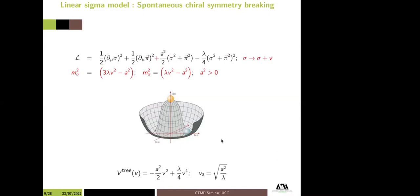To add a bit more: there is more than one parameter — you have v, the vacuum expectation value showing how far out the minimum is, but there is also the question of how large the bump in the middle of the potential is, which can be separately parameterized and plays a role in the structure of the phase transition.